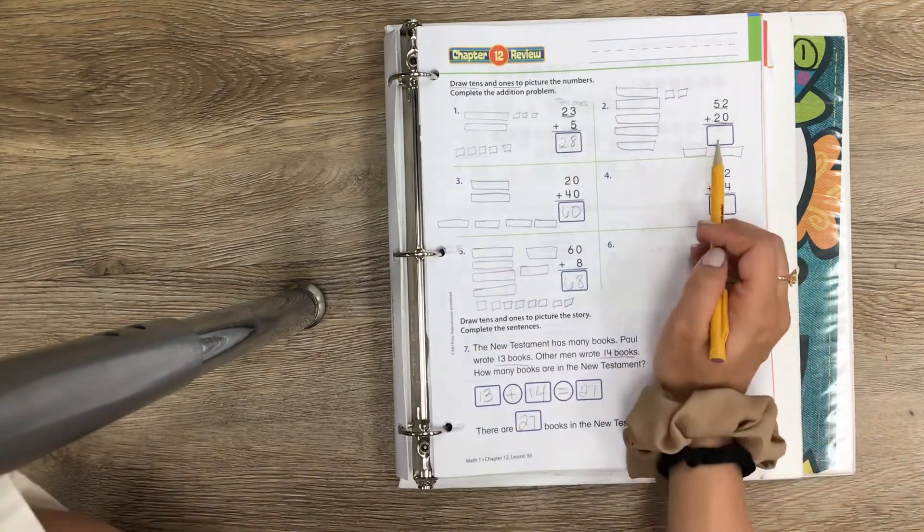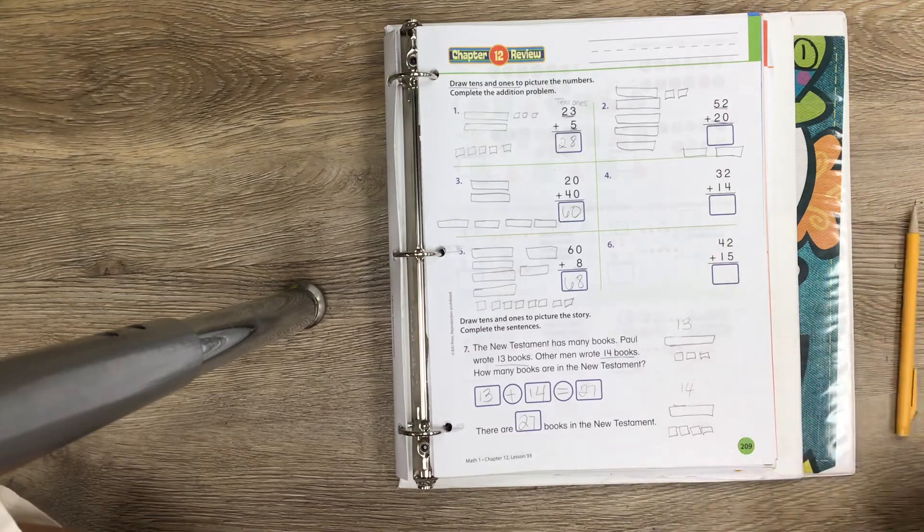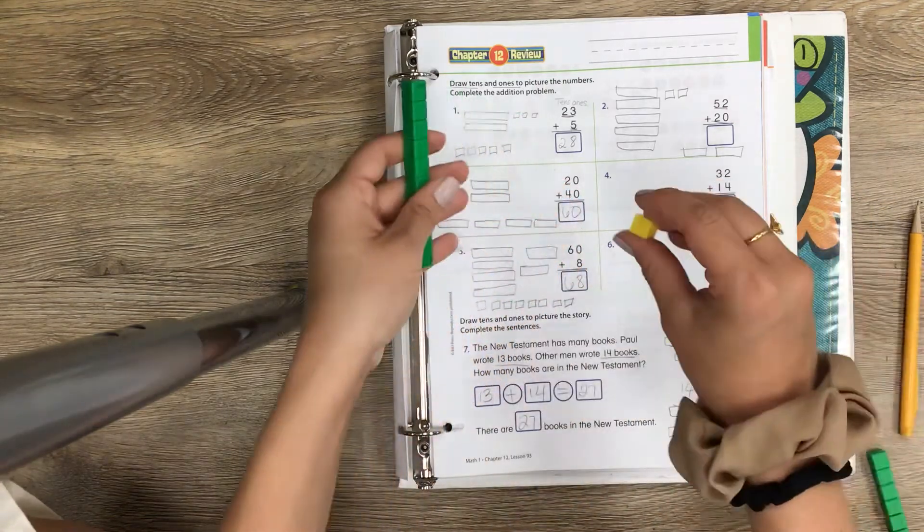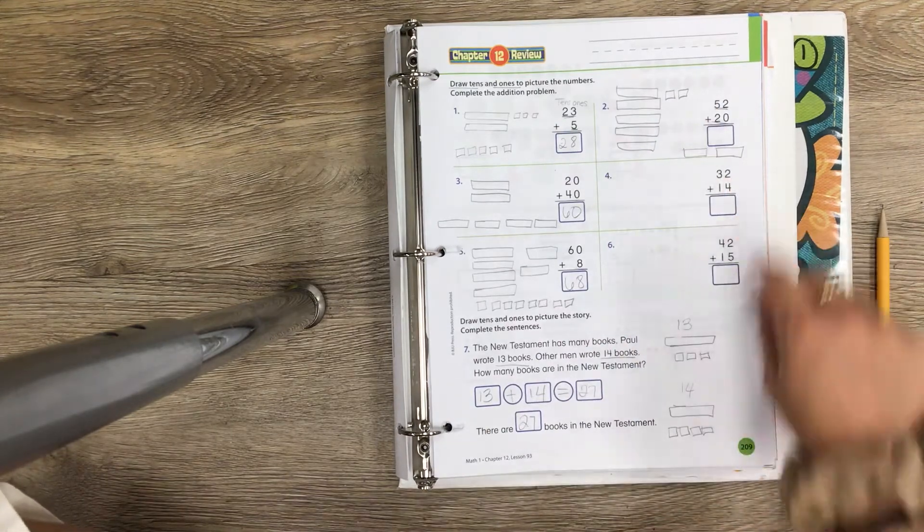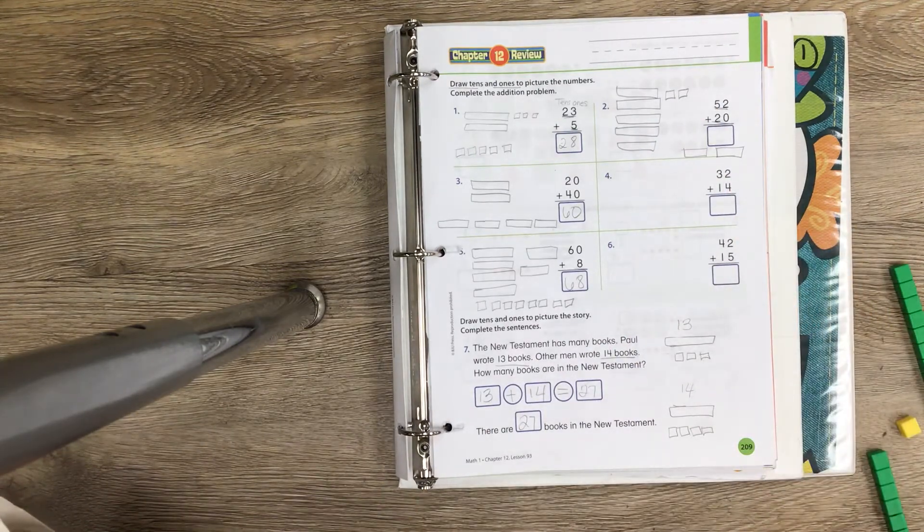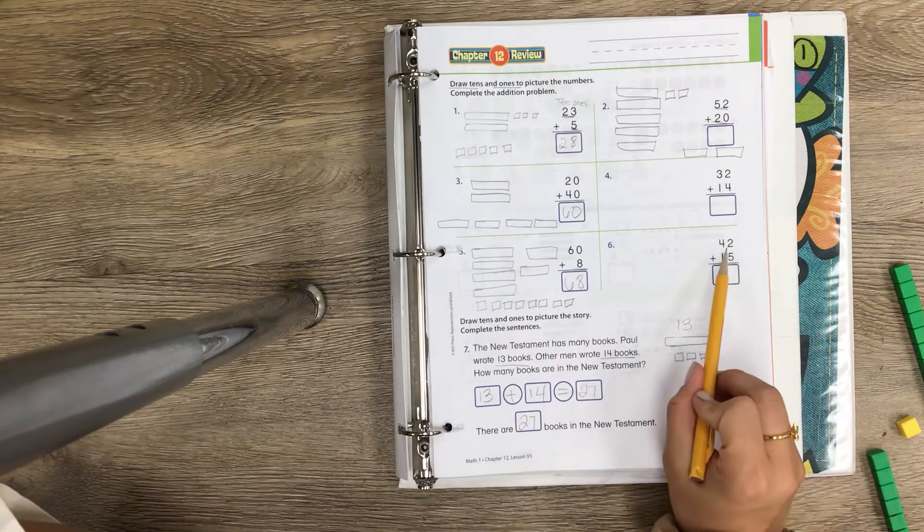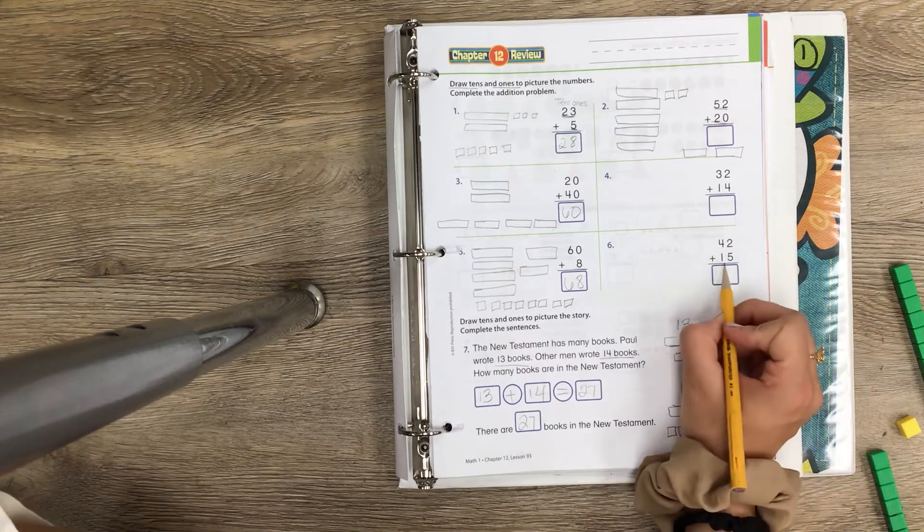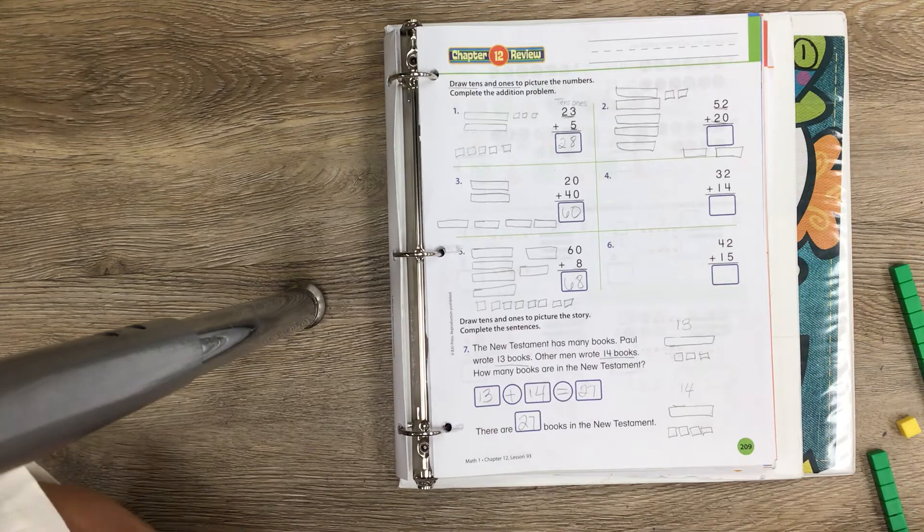For number 4, you'll make 32 by drawing out your tens and your ones to make 32. Then you'll make 14, and then you'll add them all together to get your answer. Then you're going to do the same thing for number 6. You'll draw out 42 and you'll draw out 15, and then add them up.